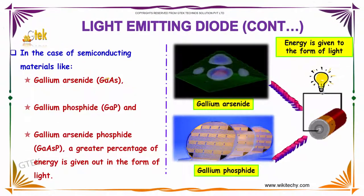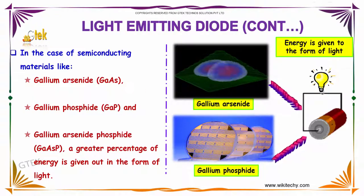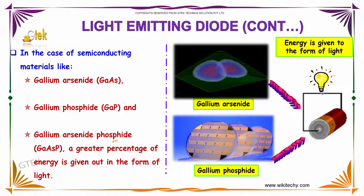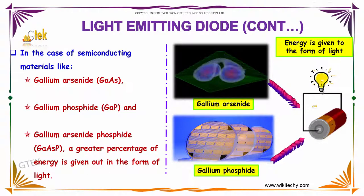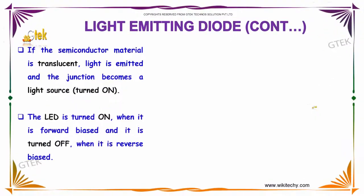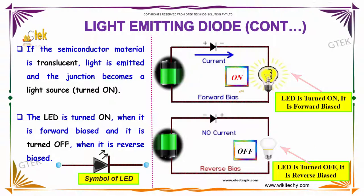In the case of semiconductor materials like gallium arsenide, gallium phosphide, and gallium arsenide phosphide, a greater percentage of energy is given out in the form of light. If the semiconducting material is translucent, the light is emitted and the junction becomes a light source when it is forward biased.